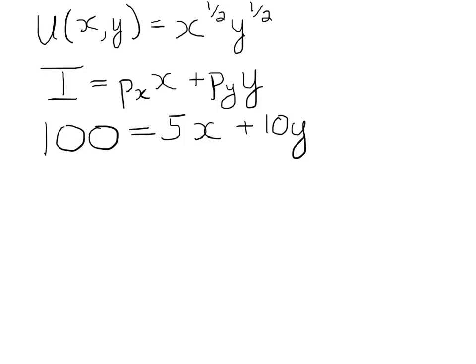To set up the Lagrange problem, we set L, our Lagrange function, which is going to be a function of x, y, and something called the Lagrange multiplier lambda. We set that equal to the utility function first, so x^(1/2) * y^(1/2), and then to that we add the budget constraint. But we have to put the budget constraint in a special form and multiply it by lambda.